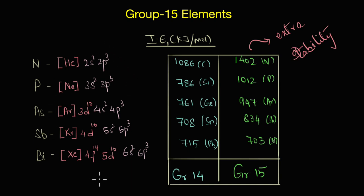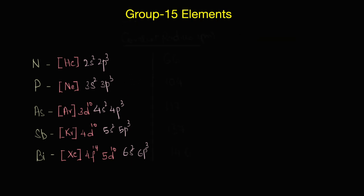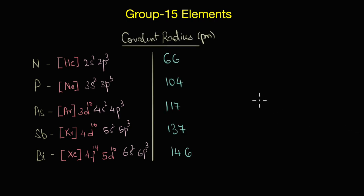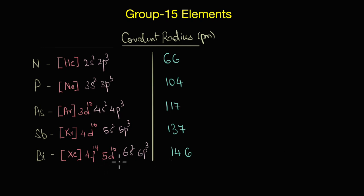Now let's look at the trends in the properties of Group 15 elements. The first property is covalent radius. As we would normally expect, atomic radius increases considerably from nitrogen to phosphorus, but only a small increase is observed from arsenic to bismuth. This can be attributed to the poor shielding effect of the intervening d and f orbitals in the heavier elements.